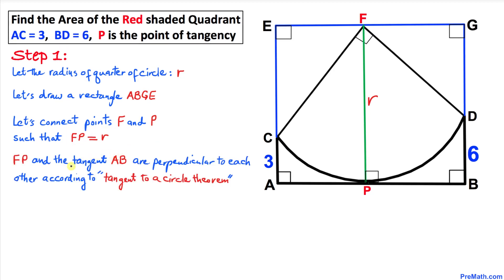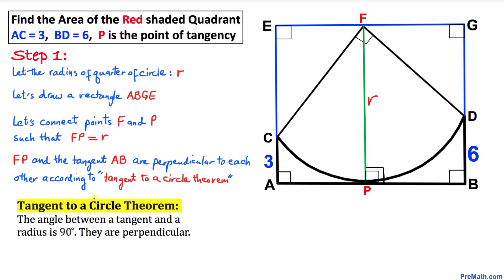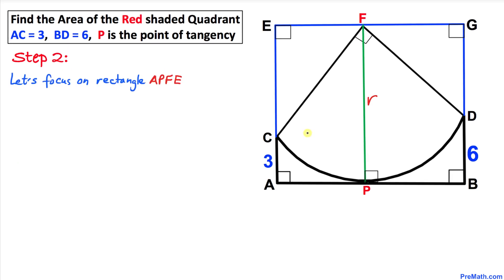Let's observe that line segment FP and tangent AB are perpendicular to each other according to the tangent-to-a-circle theorem. The theorem states: the angle between a tangent and a radius is always 90 degrees — that means they are perpendicular.